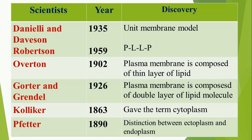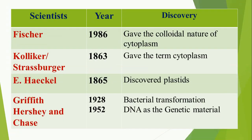Coming to cytoplasm — Koliker in 1863 gave the term 'cytoplasm.' Fitter in 1890 made the distinction between ectoplasm and endoplasm. Fischer in 1886 gave the colloidal nature of cytoplasm. Haeckel discovered plastids in 1865. We all know that DNA is the genetic material, which was confirmed with experimental proof by Hershey and Chase in 1952.